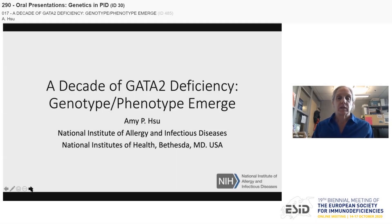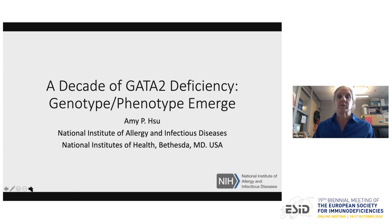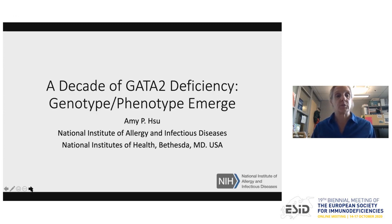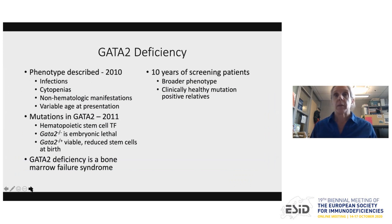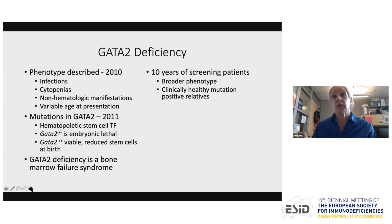Hi, my name is Amy Sue. I'm from the National Institute of Allergy and Infectious Disease at NIH in Bethesda, Maryland, and I'm going to talk today about a decade of GATA2 deficiency — the genotype and phenotype are emerging. I have nothing to disclose. GATA2 deficiency was first phenotypically described by our group in 2010, with patients presenting with infections, cytopenias, non-hematologic manifestations, and a variable age of presentation. The disease gene GATA2 was identified by our group and others in 2011. GATA2 is a hematopoietic stem cell transcription factor.